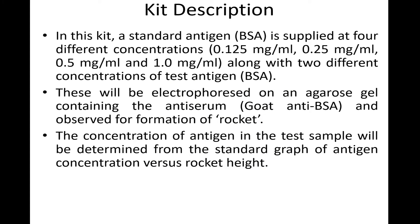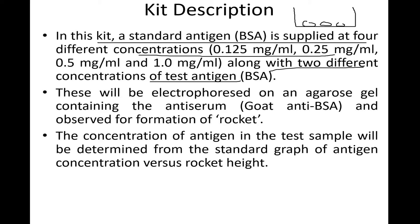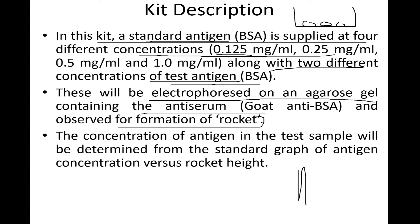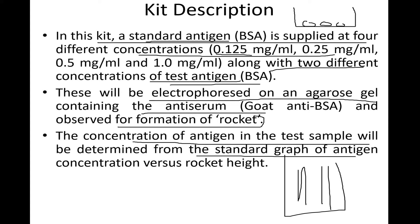In this kit, a standard antigen is supplied at four different concentrations along with two different concentrations of test antigens. The test antigens are the unknown ones, whereas the standard antigens are the known ones, with concentrations such as 0.2, 0.125, and similar values. These are electrophoresed on an agarose gel containing antiserum and observed for the formation of rockets. The concentration of antigen in the test sample is determined from the standard graph of antigen concentration versus rocket height.